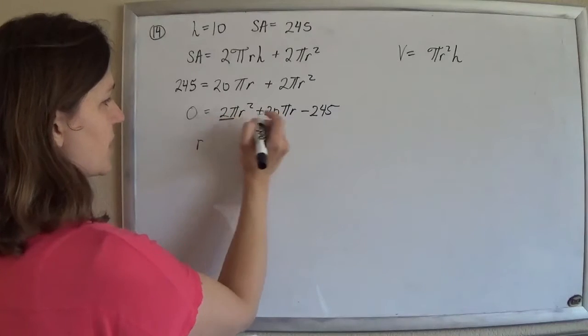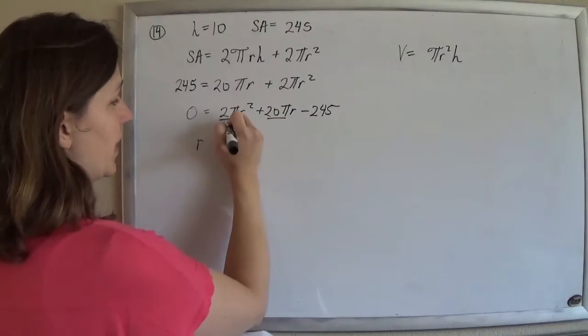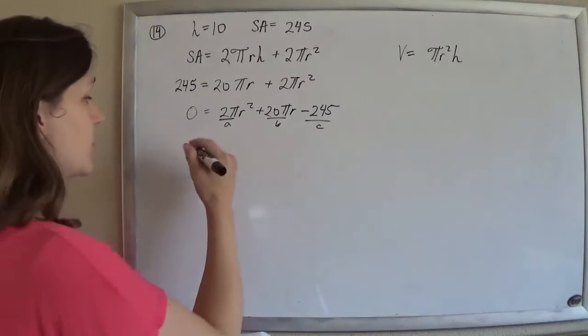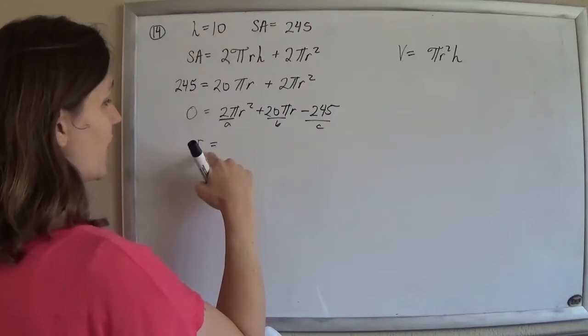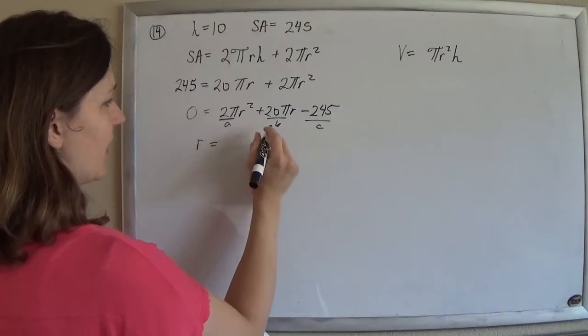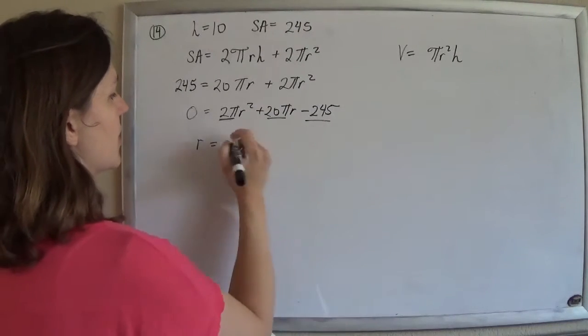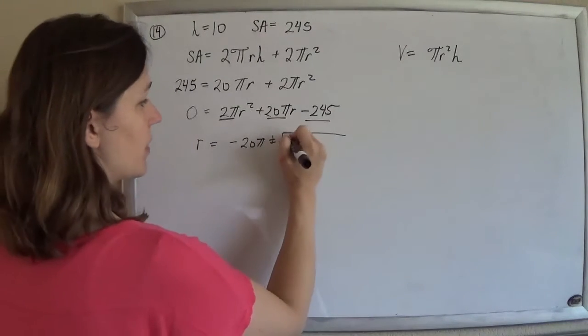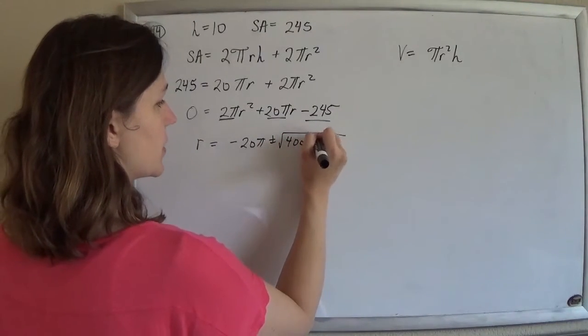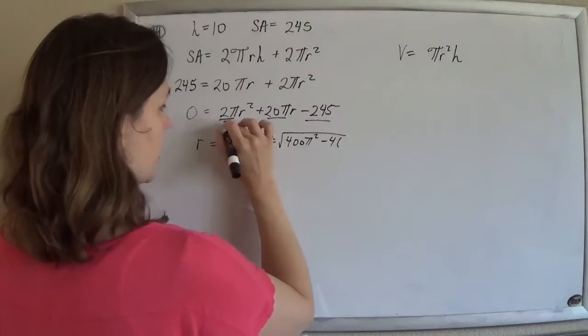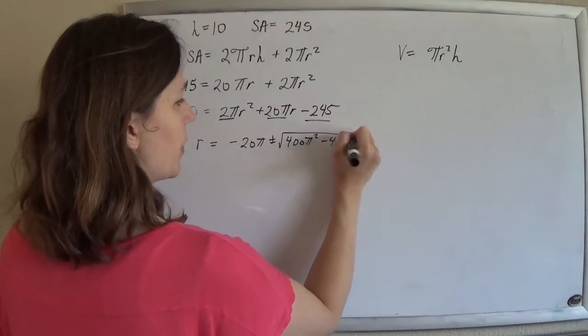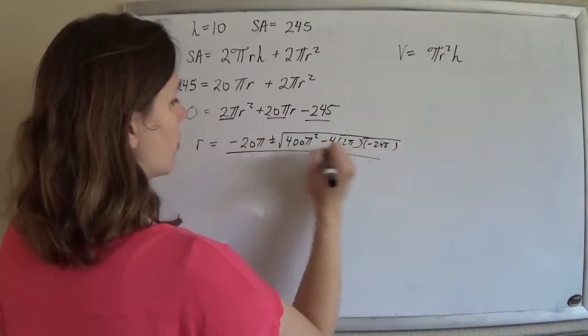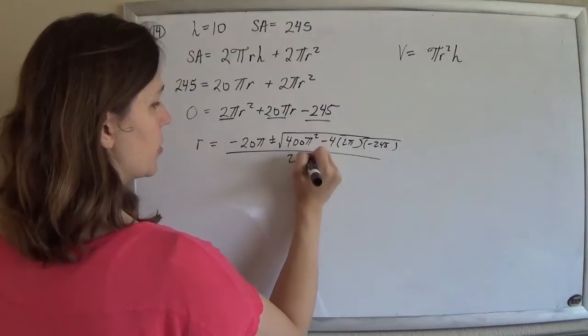So our a is just 2 pi, and our b is just 20 pi, and our c is just negative 245, and just suck it up and go. So it's going to be negative b plus or minus the square root b squared, so 400 pi squared minus 4 times a, which is 2 pi, times c, which is just negative 245, all over 2a, which is 2 pi.